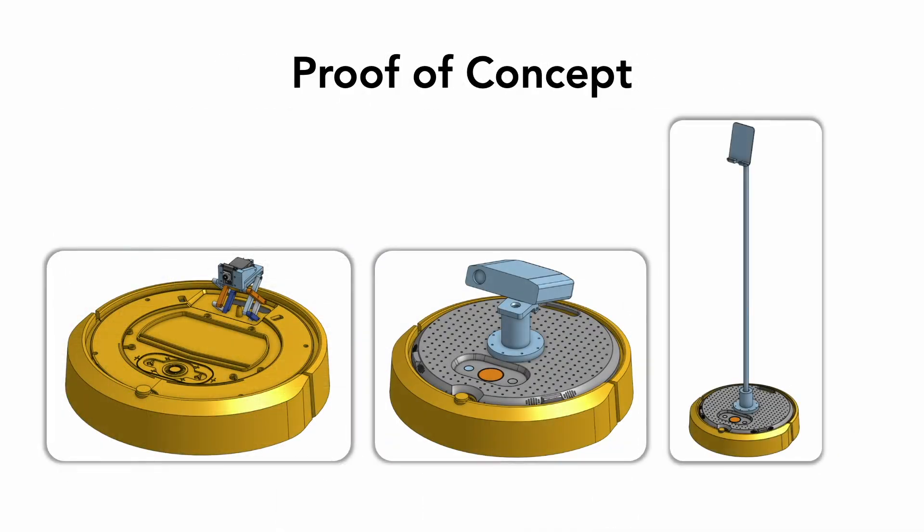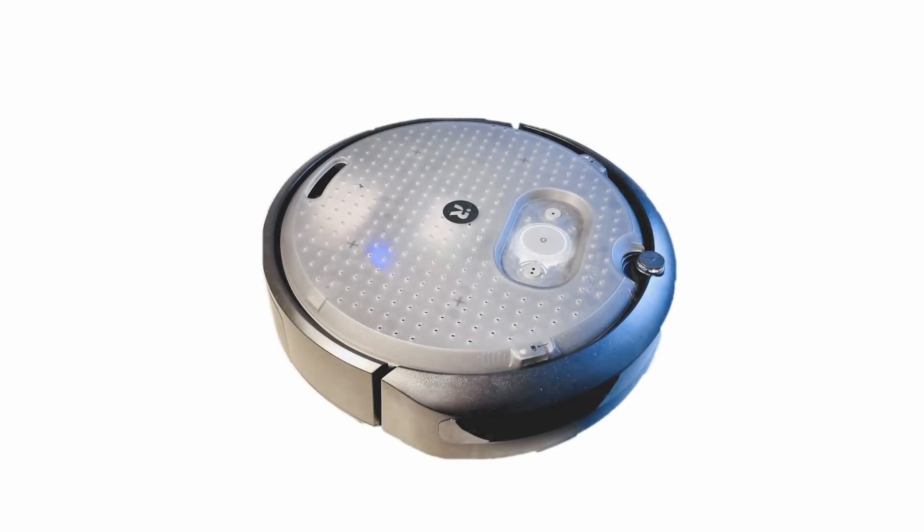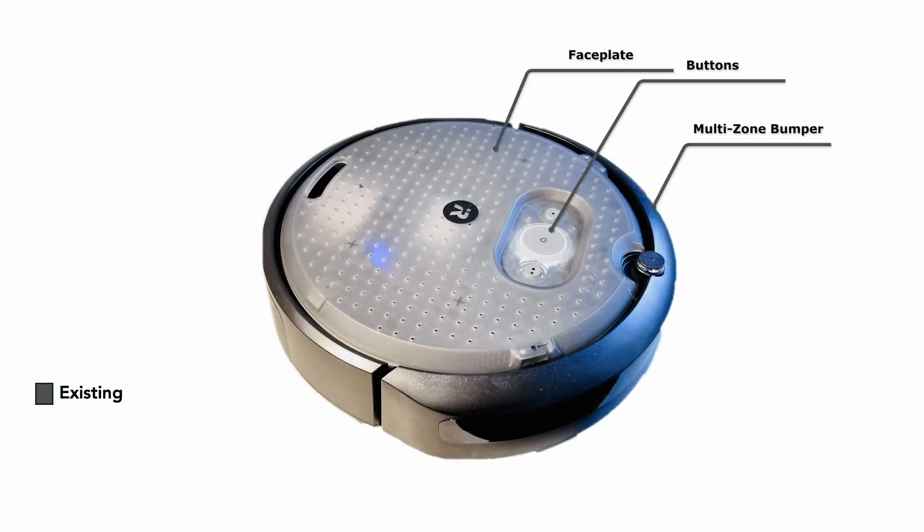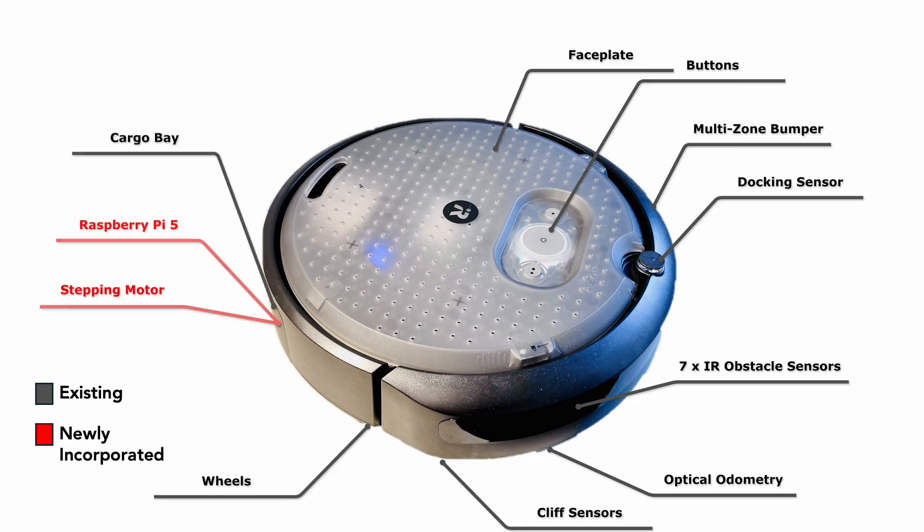We developed proof-of-concept prototypes using the Create3 mobile robot platform by iRobot. Although it lacks vacuuming functions, it supports additional integrations, including a Raspberry Pi 5 for sensor data management and communication.